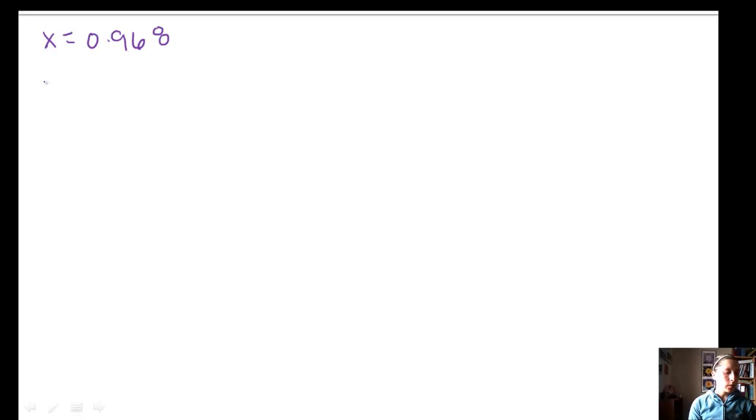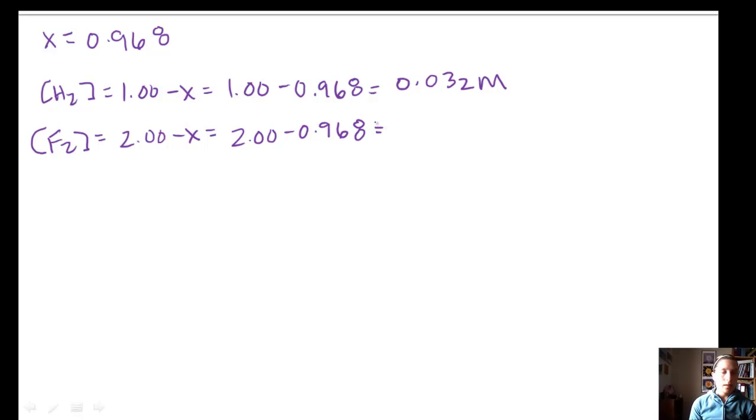We know that our X value is equal to 0.968. So now let's go through and calculate all of our equilibrium concentrations. So we know that H2 is equal to 1 minus X. So that gives us 1 minus 0.968, and so we get 0.032 of H2. If we do F2, we know from our equilibrium expression, it was 2 minus X. So it's 2 minus 0.968, and that gives us 1.032 molar. And we know for our hydrogen fluoride, it was 2X, which is 2 times 0.968. So it's 1.936 molar.